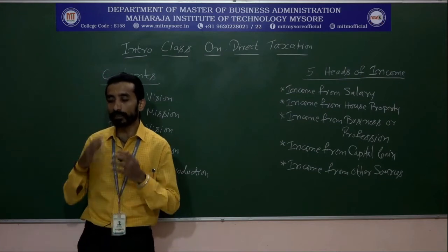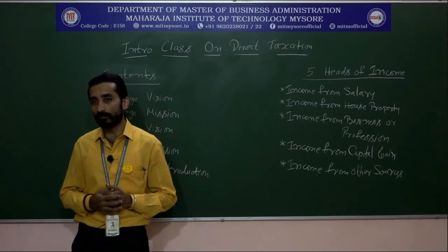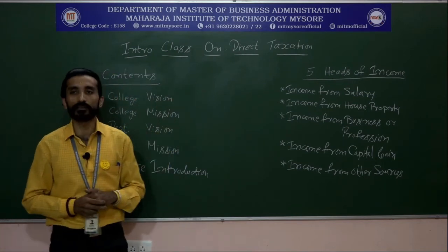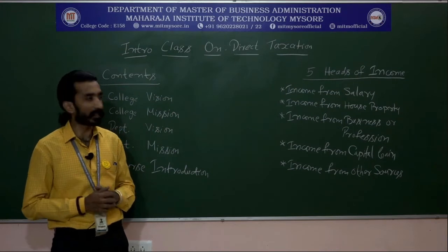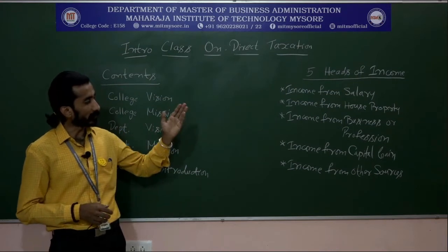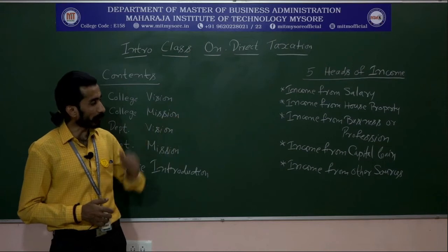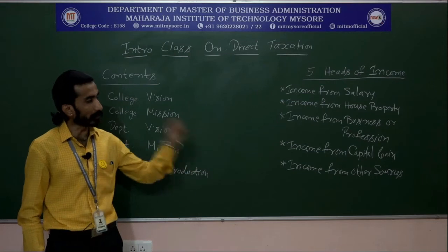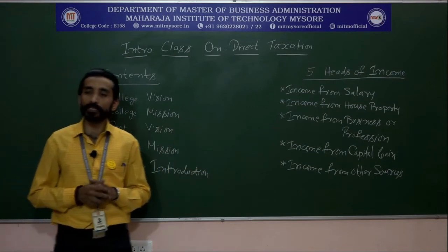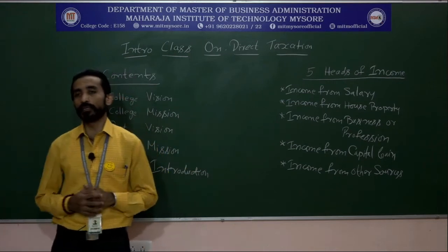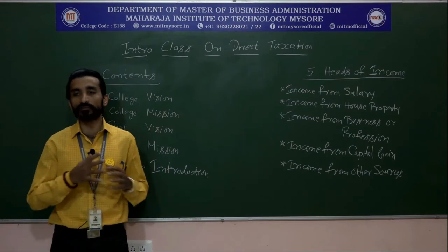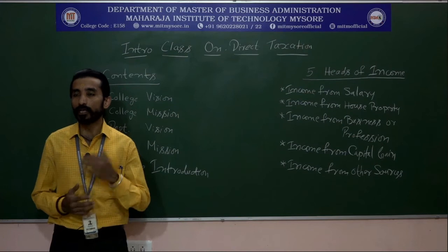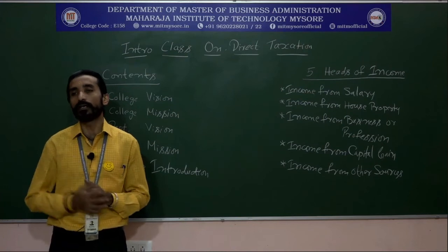Before going through the 6 units, you need to know the 5 heads of income involved in taxation: income from salary, income from house property, income from business or profession, income from capital gain, and income from other sources. These 5 heads are compiled and combined across all 6 units you will be studying in direct taxation.